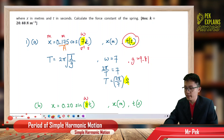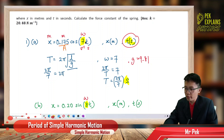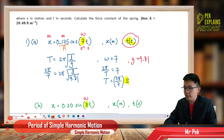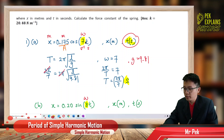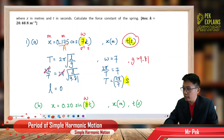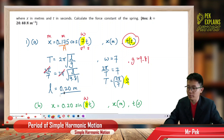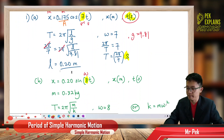So: 2π/7 = 2π√(L/9.81). The 2π cancels, and solving for L gives L = 0.2 meters. That's the length of the pendulum.